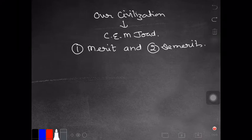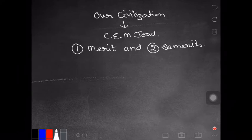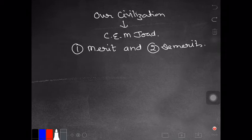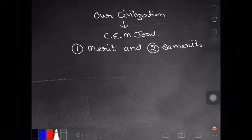It means this essay has two parts. In the first part of the essay, the essayist talks about the merits of modern civilization, the positives of modern civilization. And in the later part, the essayist discusses the demerits or defects of modern civilization. So now let us briefly have a look at what are the merits and demerits of modern civilization.